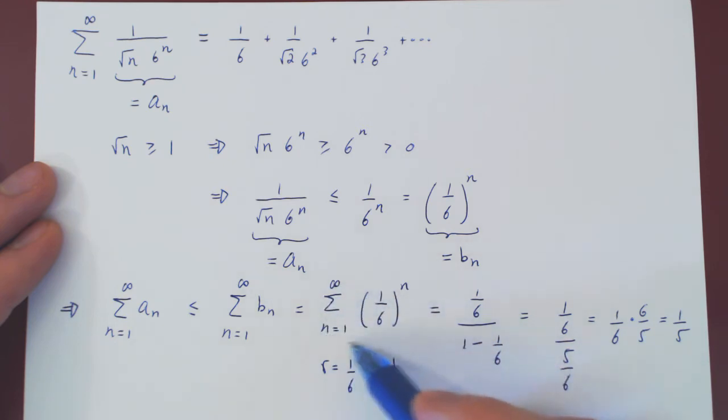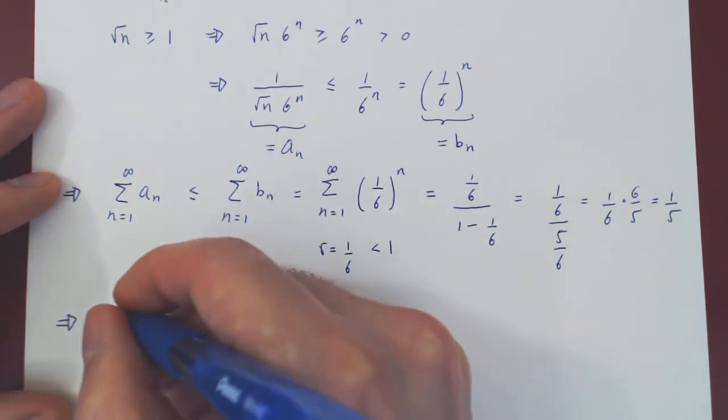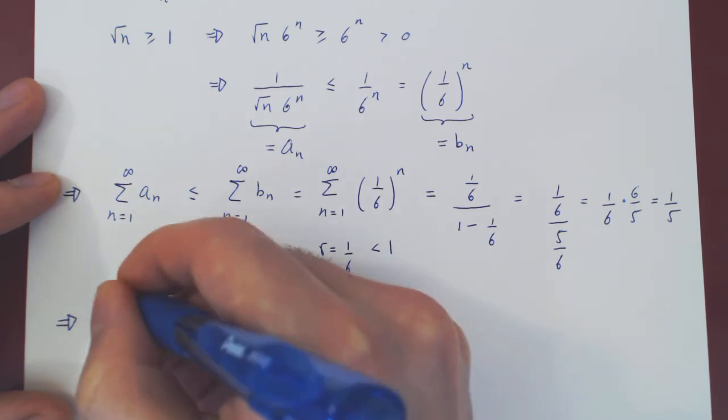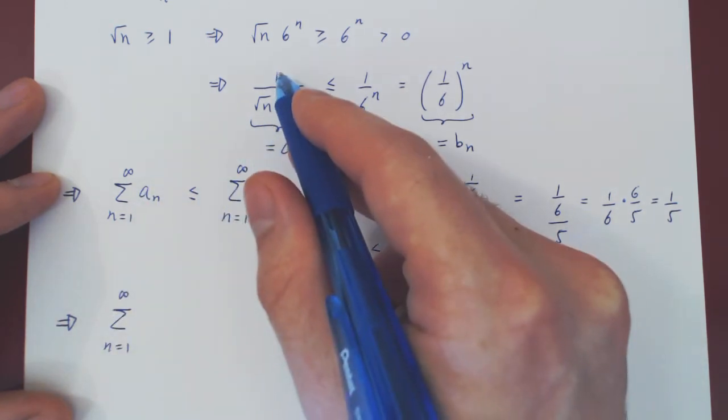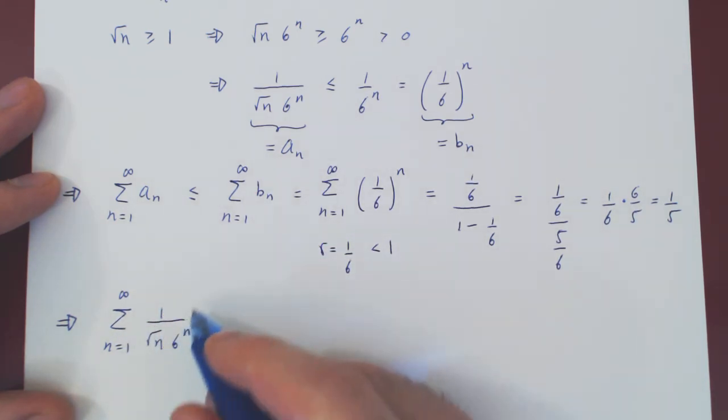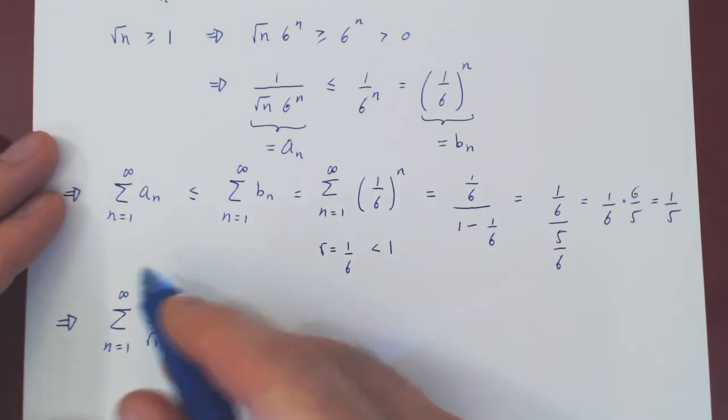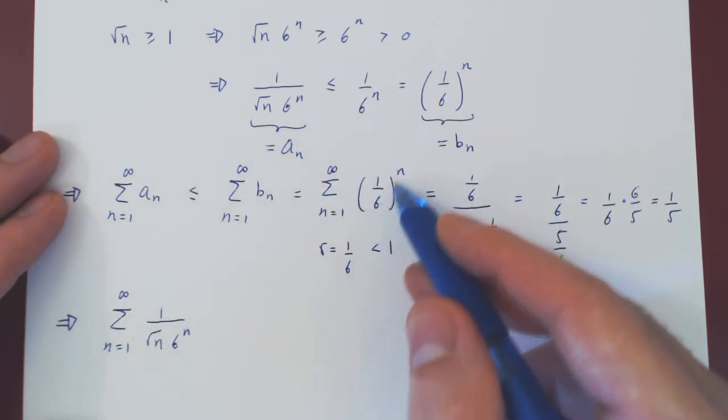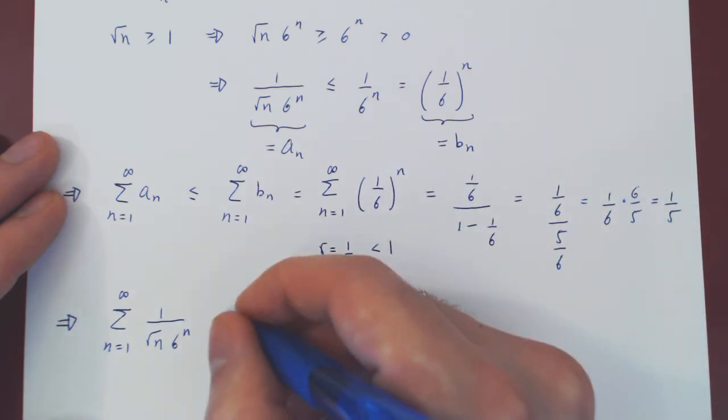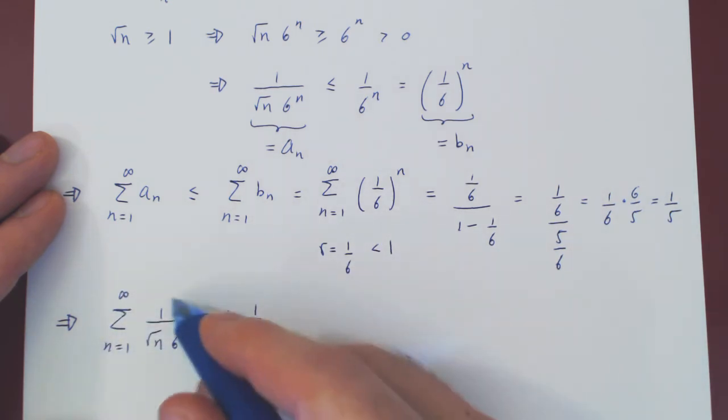And we don't really care again that this series is exactly 1 over 5. All we really wanted was that this series is finite, because it converges. And now we're essentially done. Because the original series, and I'll rewrite a_n as again, 1 over root of n, 6 to the n, is a series of positive terms. So either it is finite, therefore converges, or it is infinite, therefore diverges. But this series is at most, this convergent geometric series, which is simply 1 over 5. So the initial series is bounded by 1 over 5. So this series is finite.